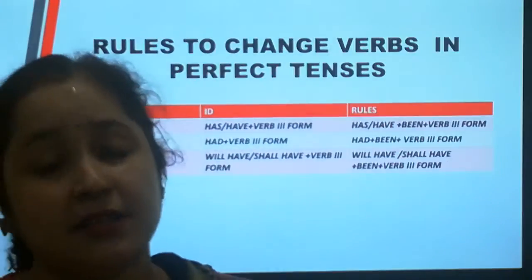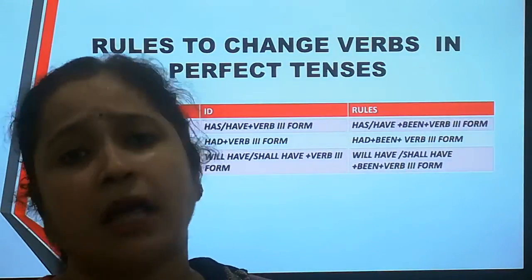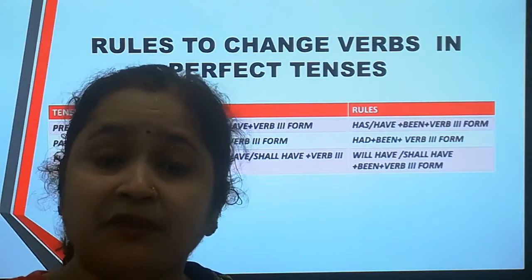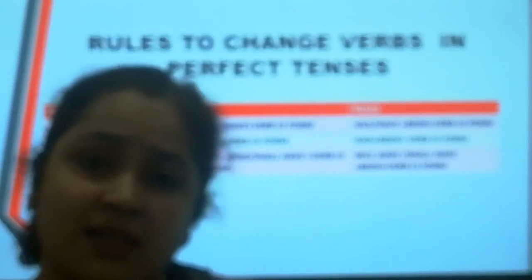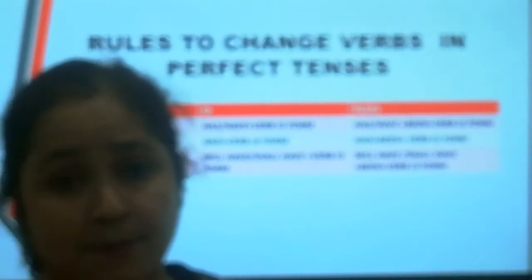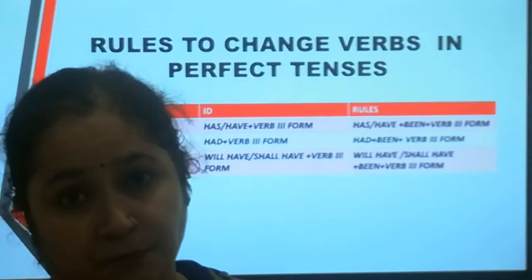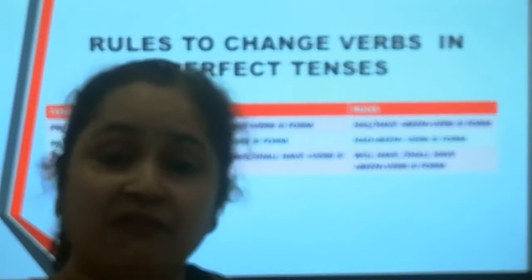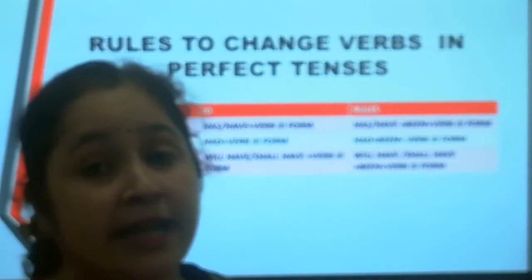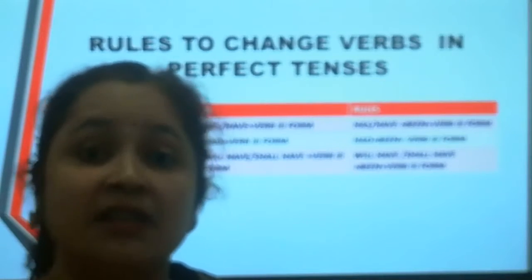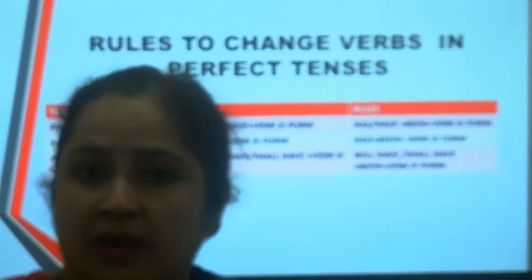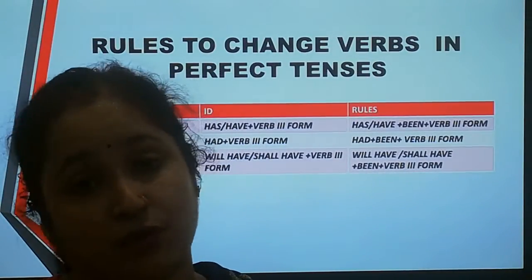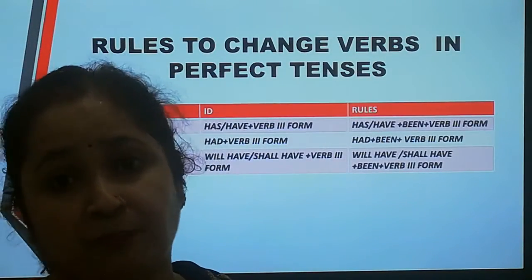So students, you have clearly understood that there is no need to think about the third form of the verb, as the third form is already present in the active voice sentences. We just put this third form as it is in passive voice. For the helping verb: 'has' or 'have' is for present perfect, 'had' is for past perfect, and 'will have' or 'shall have' is for future perfect tense. Remember, with 'I' or 'we' we use 'shall have', and with words other than 'I' and 'we' we use 'will have'. To make it passive voice, add 'been'.